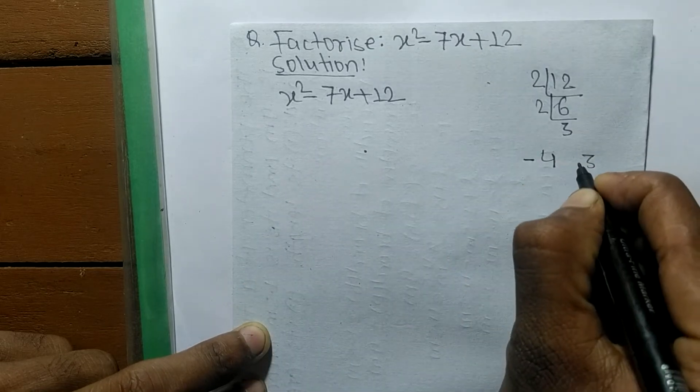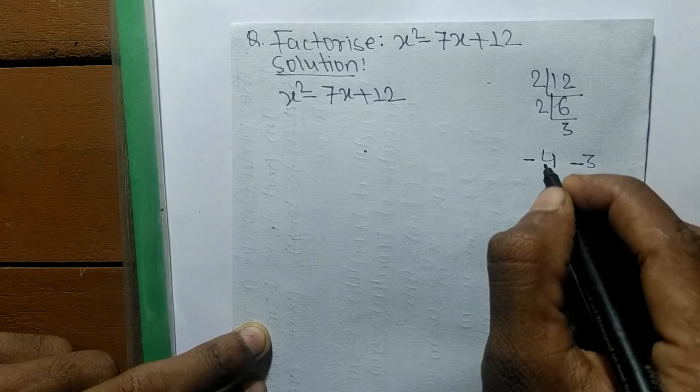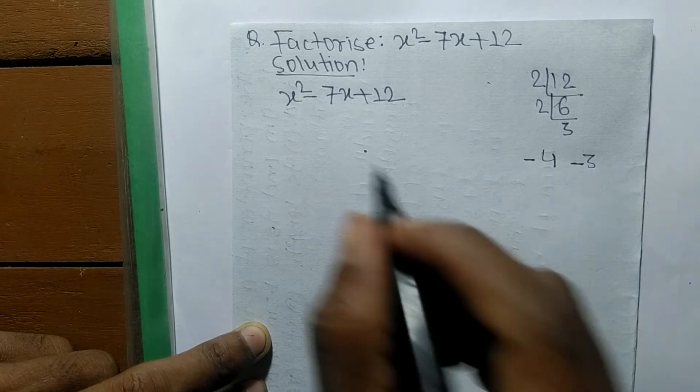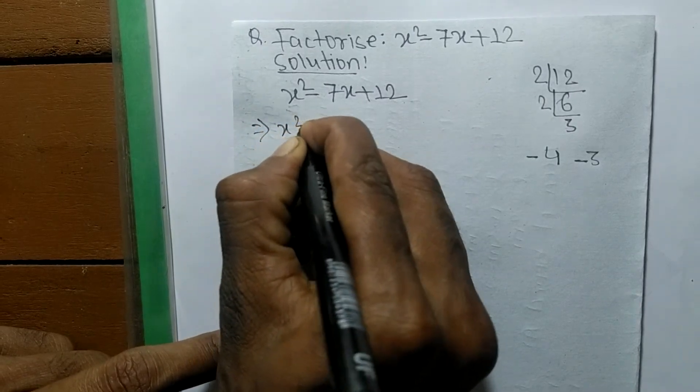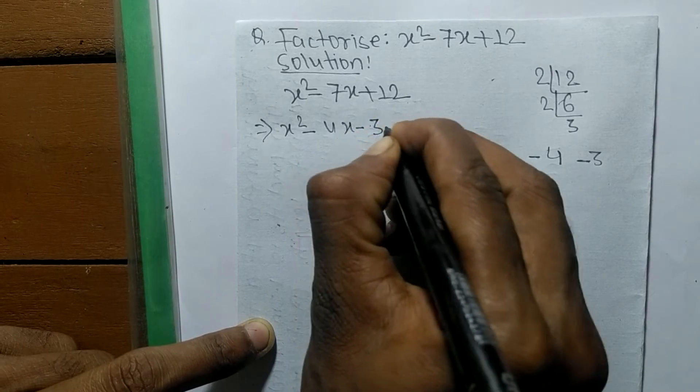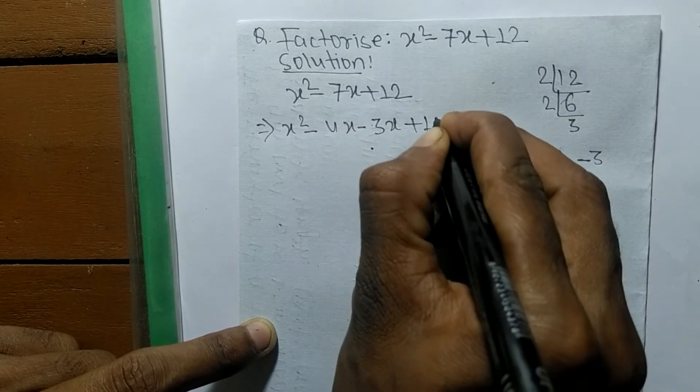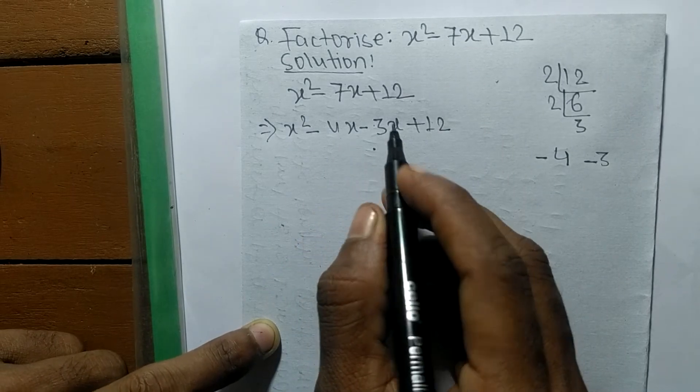Here the sign is minus, so we use -3 and -4. -4 plus -3 equals -7. So we can write it as x² - 4x - 3x + 12.